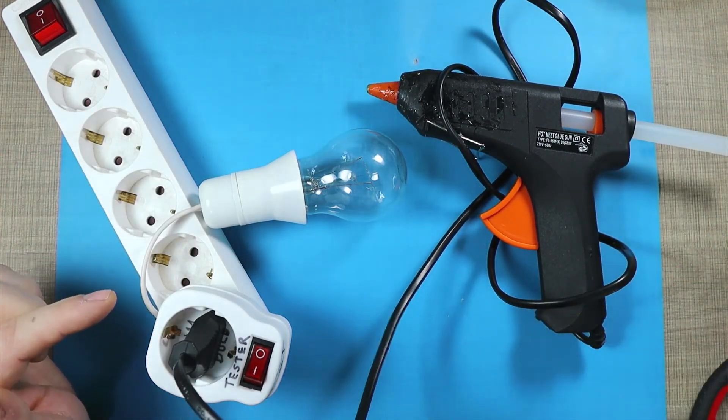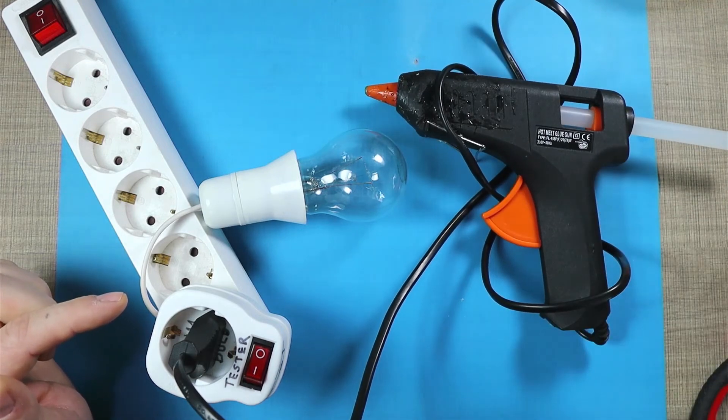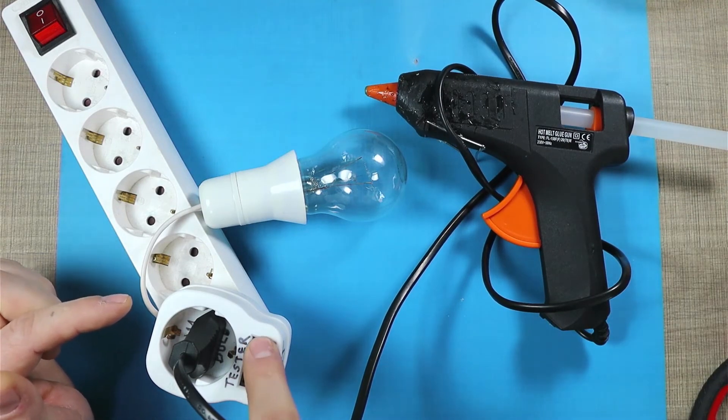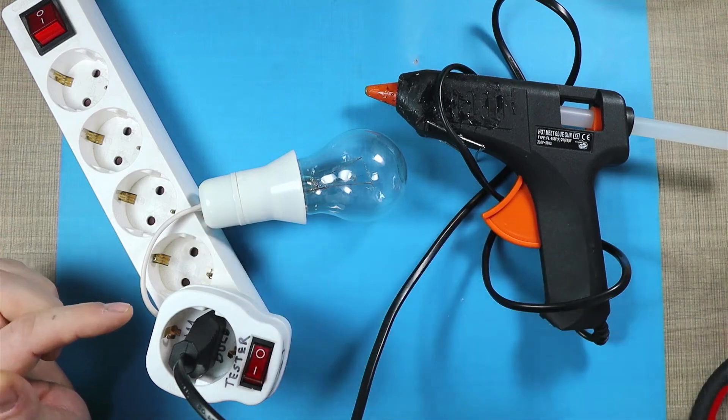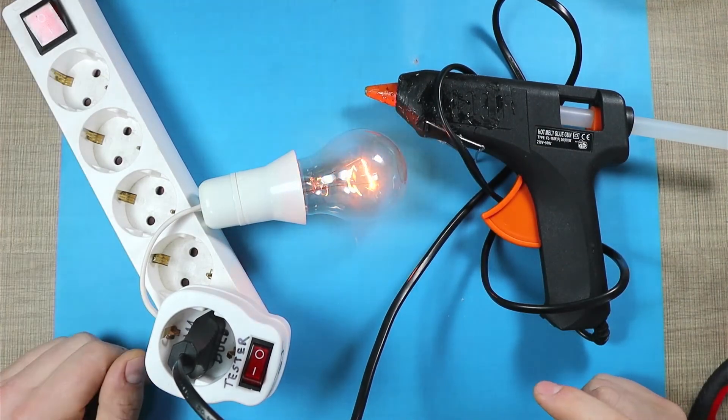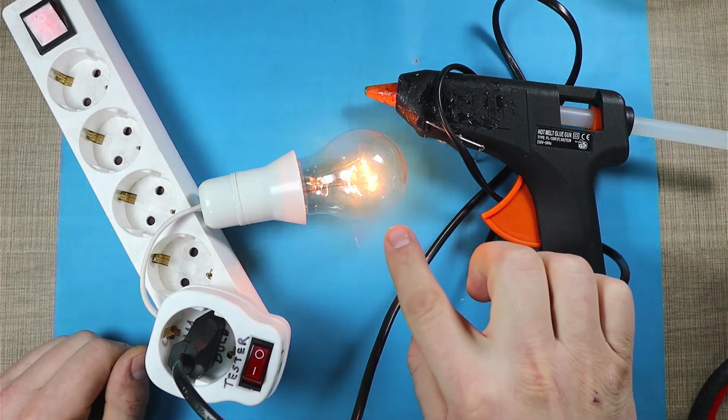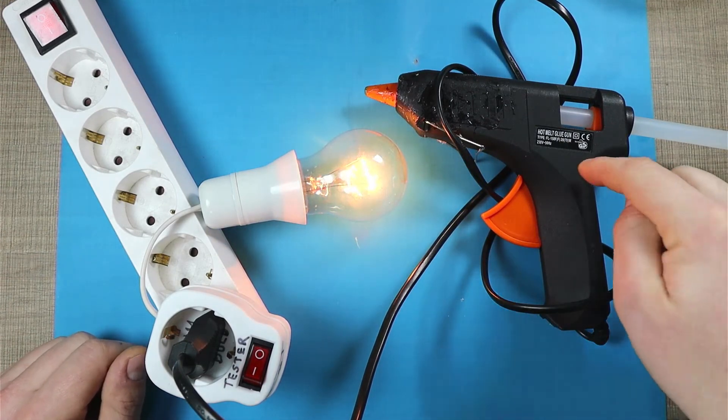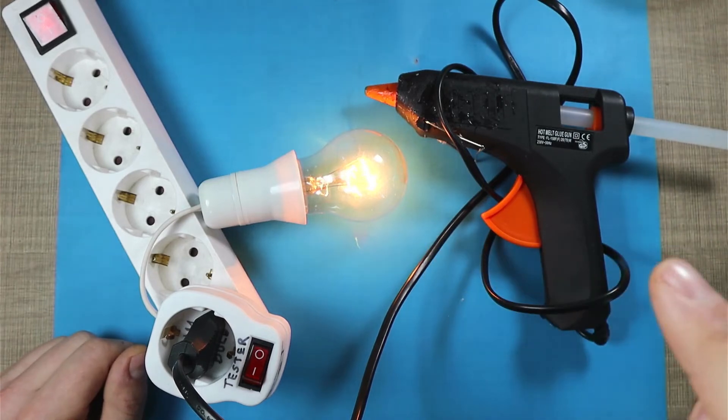Now I have my hot glue gun plugged into the tester and this is still in the off position, so it means that the hot glue gun will be powered through the light bulb. If I turn it on, you'll see that now the light glows dimly, meaning that now we are pulling in a lot more current with the hot glue gun than we were pulling with the adapter.